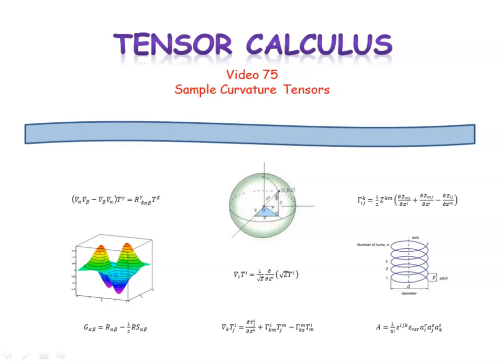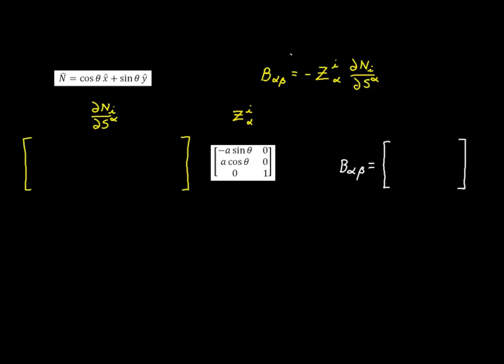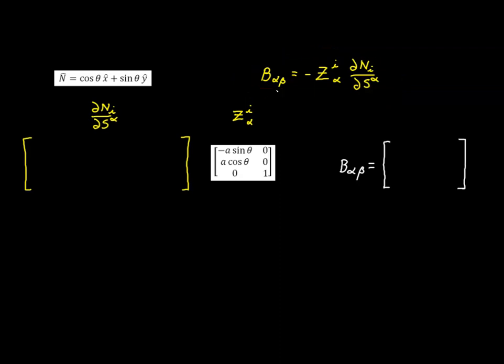In video 75 of tensor calculus, we'll use one of the formulas we derived in the previous video to evaluate the curvature tensor for each of our sample surfaces. The formula is made up of two components: the shift tensor, and all the possible partial derivatives of our normal with respect to our surface coordinates.